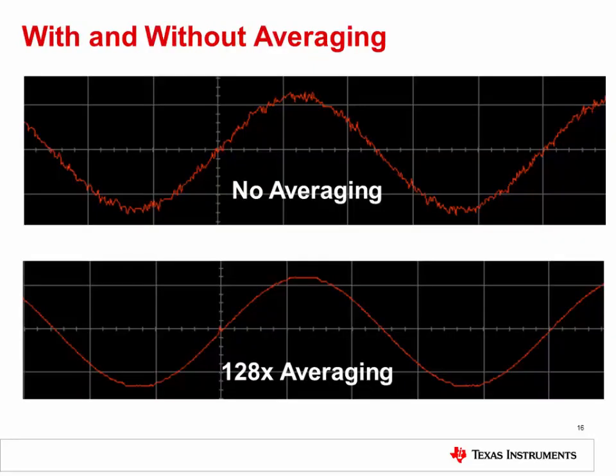When measuring periodic signals, averaging can help significantly reduce the amount of noise displayed on the measured signal. This slide shows the difference between no averaging, or sample mode, and 128 times averaging.